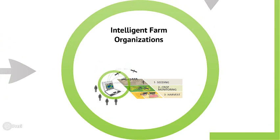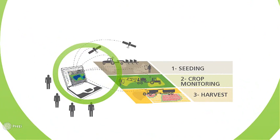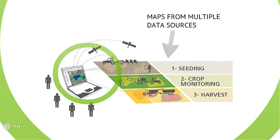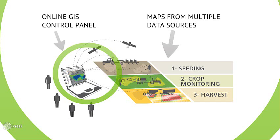What we're pointing at is intelligent farm organizations, in a nutshell. That means capturing data from the different sources you may have during the crop season — during seeding, crop monitoring, in-season fertilization, pest control, everything that happens during the crop season, and finally in the harvest. All of this goes into an online GIS control panel, Farmset 360, and basically the concept is: more knowledge will help us take better decisions.